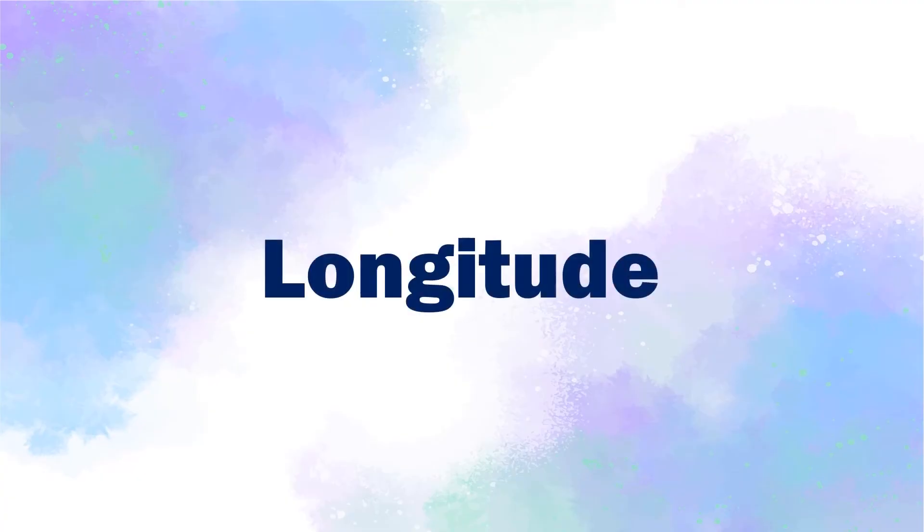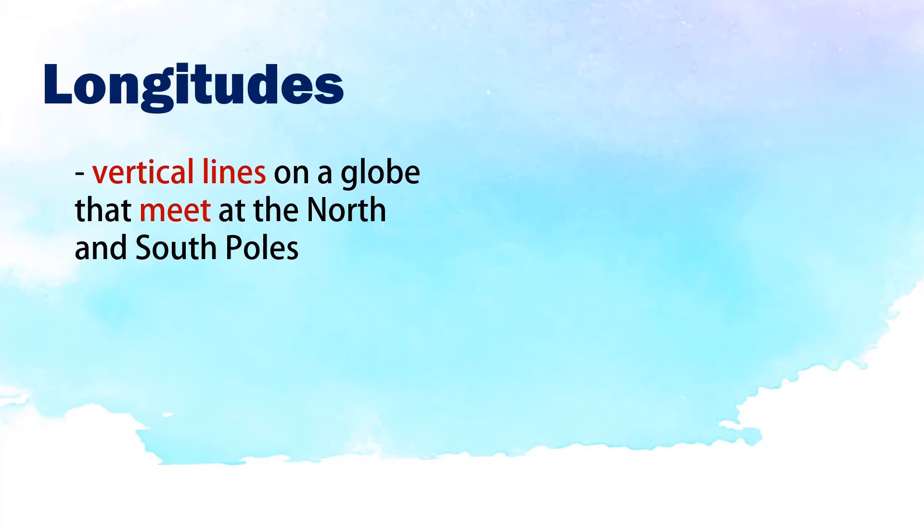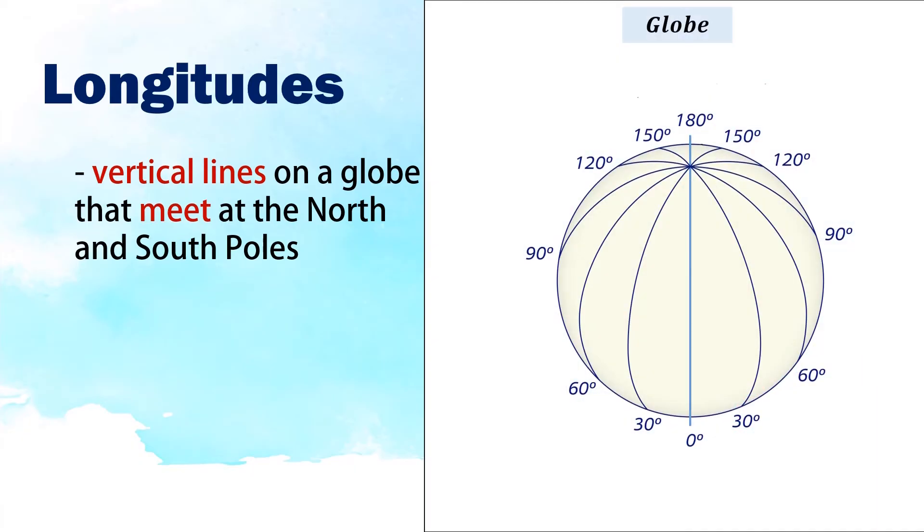Now, let us talk about longitude. Longitudes are vertical lines on a globe that meet at the north and south poles. In this illustration, the vertical lines that meet at the north and south poles are longitudes.